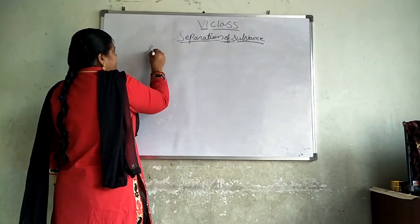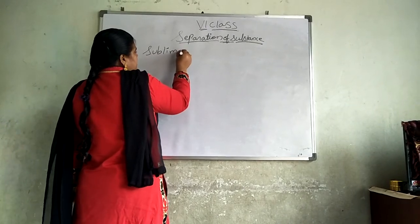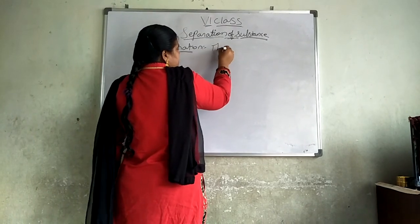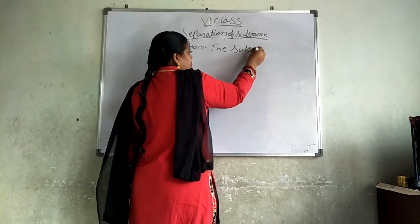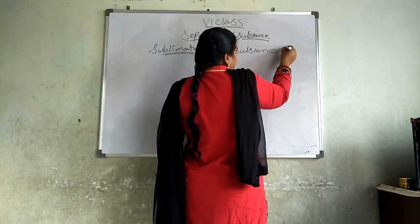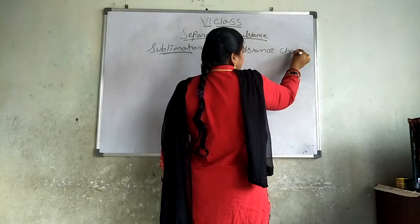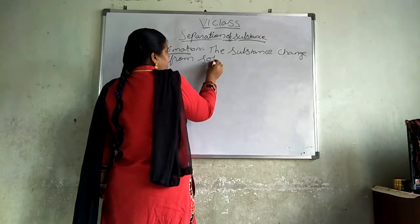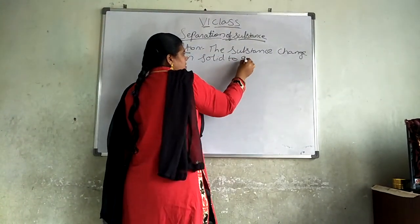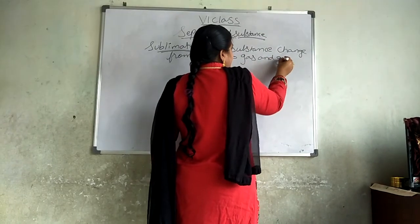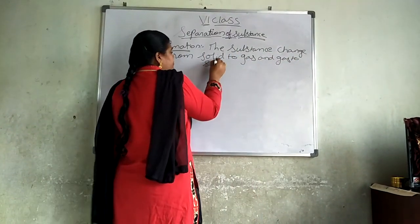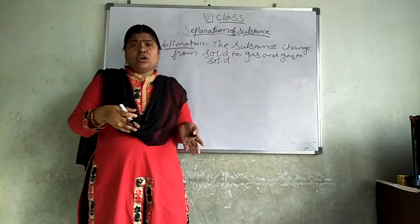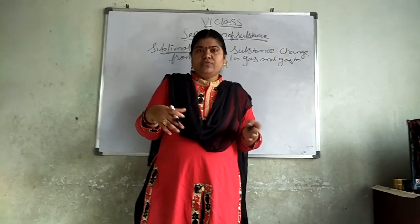First one is the sublimation. What is meant by sublimation? The substance changes from solid to gas. Solid to gas and gas to solid is called as the sublimation process. We know that substances change from solid to liquid, liquid to solid or liquid to gaseous, gaseous to solid.